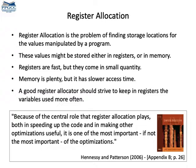Memory is plenty but slow. Registers, in turn, are only a handful. However, they provide very fast access. In the words of Hennessy and Patterson, register allocation is one of the most important compiler optimizations.